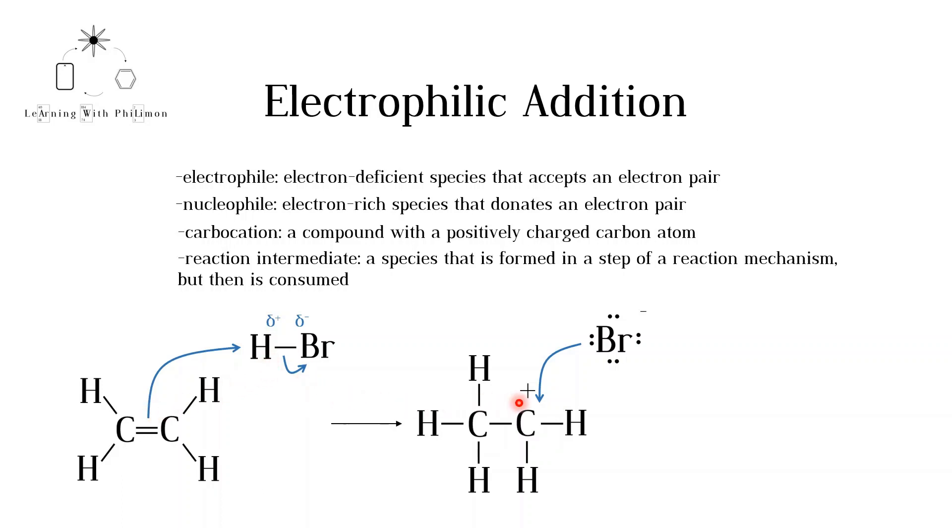The product of this reaction is bromoethane, a haloalkane. Now, let's see what happens when an alkene reacts with a halogen instead of a hydrogen halide.